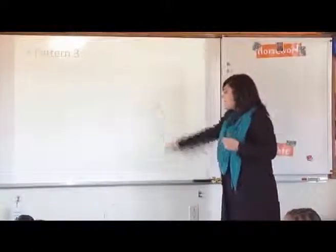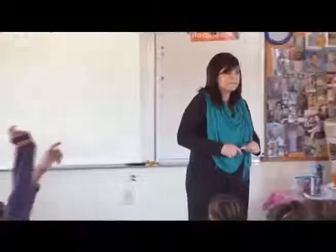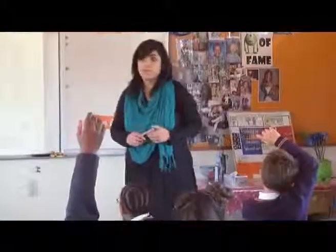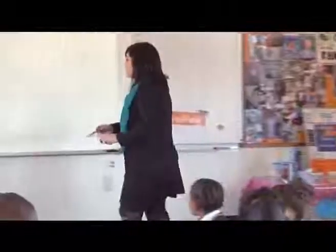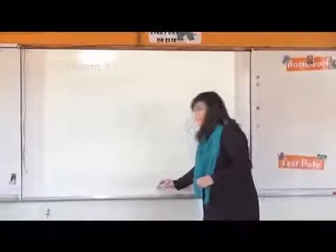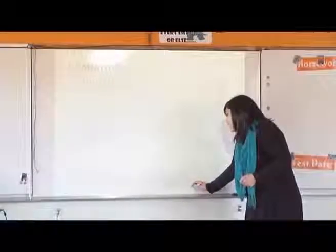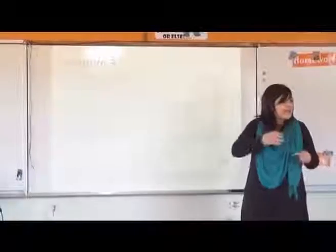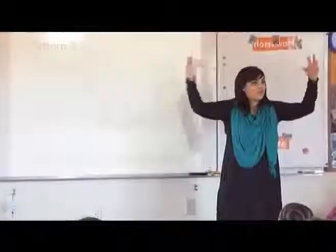So the rule with this pattern was — who can tell me what the rule was? It was plus two, then three, then four, then five. Yes. So we added one to every step. First we had two, then we had three, then we added four, and then we added five. So we were adding one at the bottom, adding it to the pattern so that the pattern could grow.